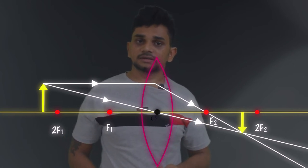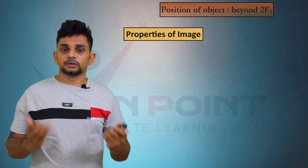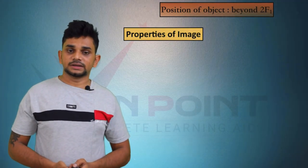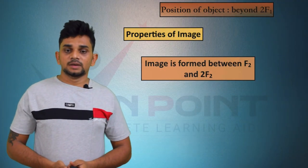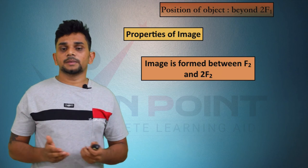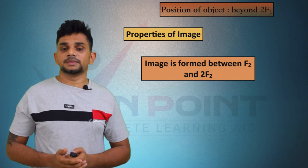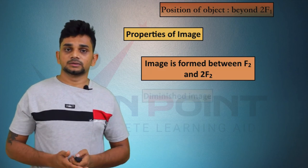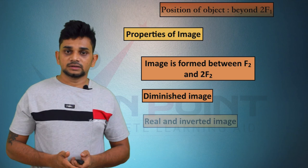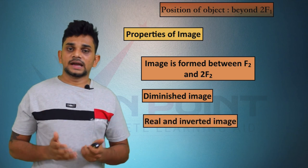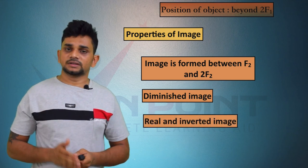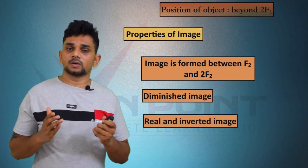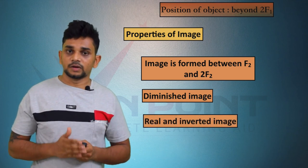The image is diminished, real, and inverted. Properties of image: position of object is beyond 2F1; image is formed between F2 and 2F2; it is a diminished, real, and inverted image. These are the properties of the image formed by a convex lens when the object is beyond 2F1.